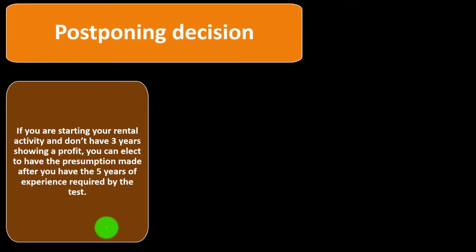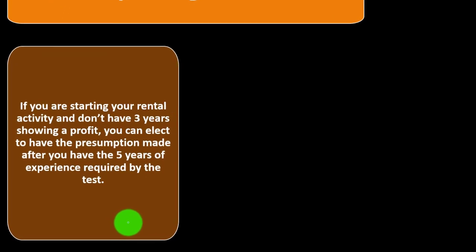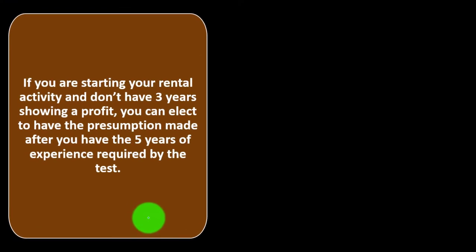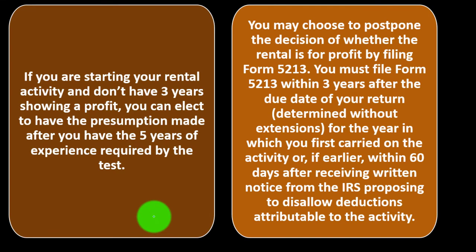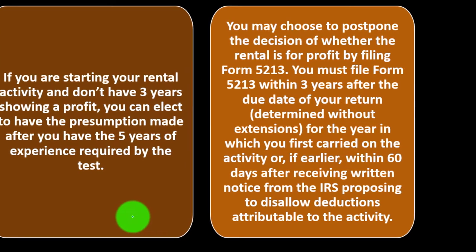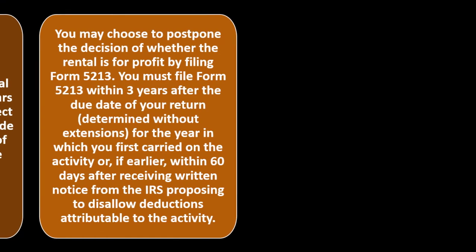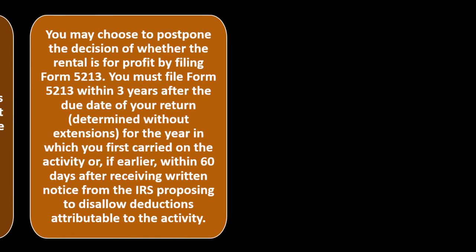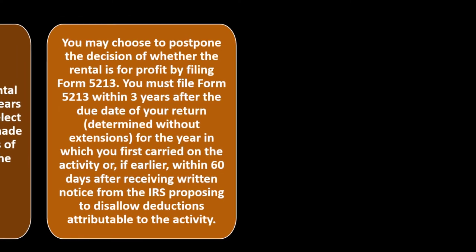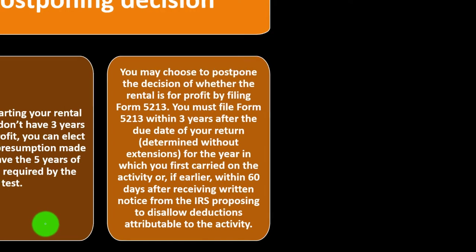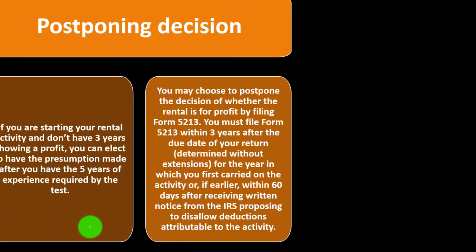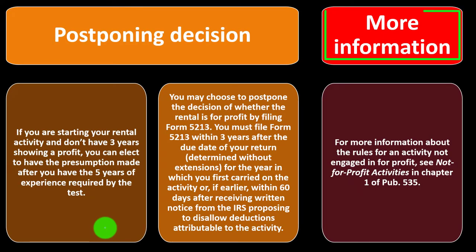If you are starting your rental activity and don't have three years showing a profit, you can elect to have the presumption made after you have five years of experience as required by the test. You may choose to postpone your decision of whether the rental is for profit by filing Form 5213. You must file Form 5213 within three years after the due date of your return for the year in which you first carried on the activity, or within 60 days after receiving written notice from the IRS proposing to disallow deductions. More information can be found in Publication 535, Chapter One.